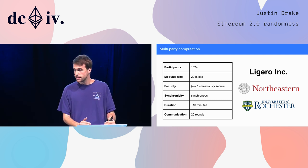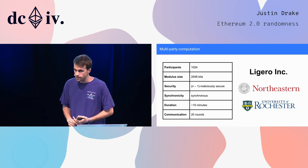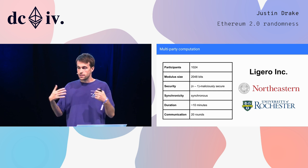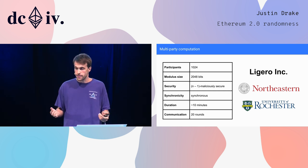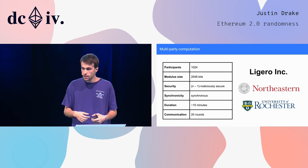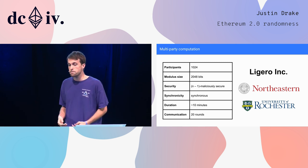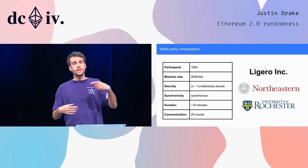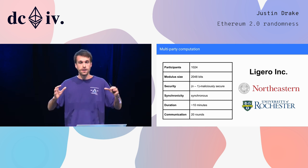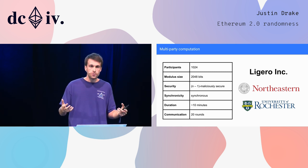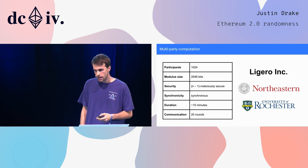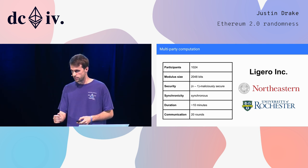The team working on the multi-party computation is Ligero — experts in MPCs from a couple of universities. The parameters of the ideal MPC they're building: 1,000 participants, which is much bigger than Zcash's 88; a modulus of size 2,000 bits; N-1 malicious security, meaning you only need one honest participant. One tricky aspect is that it's synchronous, so everyone needs to be online at the same time. The good news is it's a one-time setup lasting only about 10 minutes, achieved by reducing the protocol to just 20 rounds of communication.